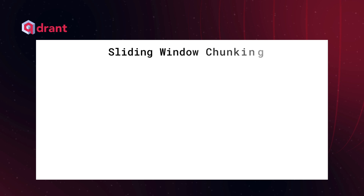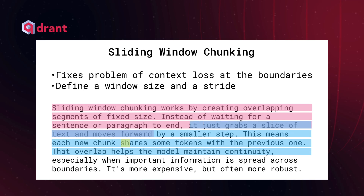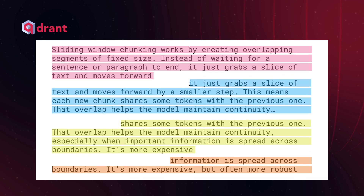Another method you can choose is sliding window chunking, which solves a very common problem in fixed-length chunking: context lost at the boundaries. Instead of splitting without overlap, you define a window size and a stride. Each chunk overlaps with the previous one by a defined number of tokens, which helps maintain continuity between chunks. Sliding window is especially useful when you are more concerned about not missing anything rather than optimizing for speed or storage. You usually get higher recall and more chances to match queries with subtle context. The cost is redundancy — it takes more storage and compute to process those embeddings, but sometimes it's worth the trade-off.